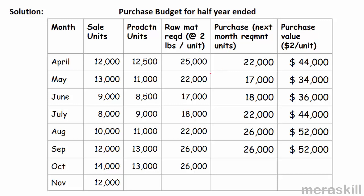Since the closing stock of raw material equals the amount to be consumed in the next month, the opening inventory equals the current month's consumption. These cancel out in the formula, so what I end up purchasing is simply the amount required for the next month. Applying the same formula confirms: purchase quantity equals next month's requirement.